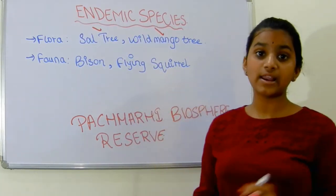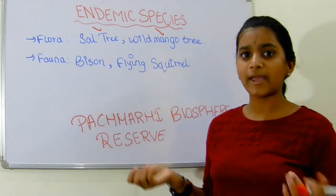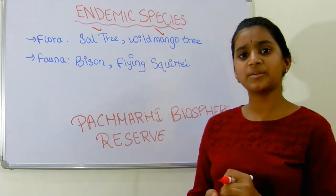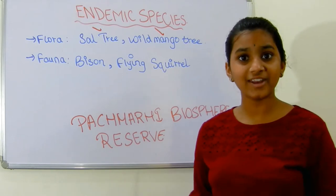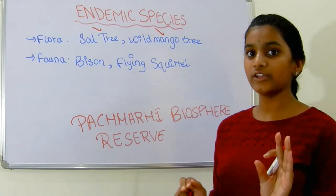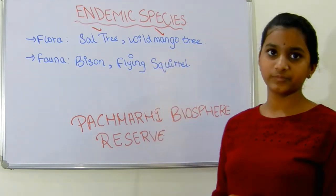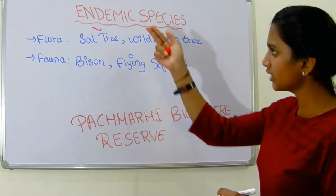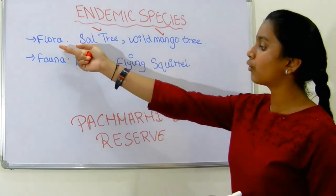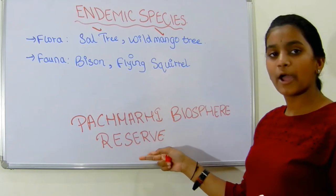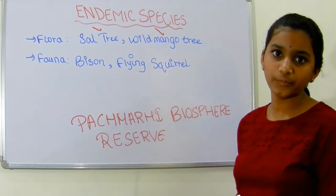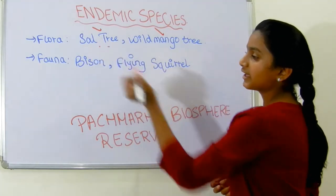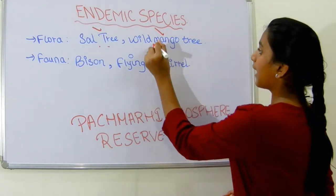Have you seen wild mango trees anywhere — in Karnataka or near your house? Nowhere, right? This wild mango tree is only found in this reserve. So the Sal tree and the wild mango tree are the endemic flora of the Pachmari Biosphere Reserve.